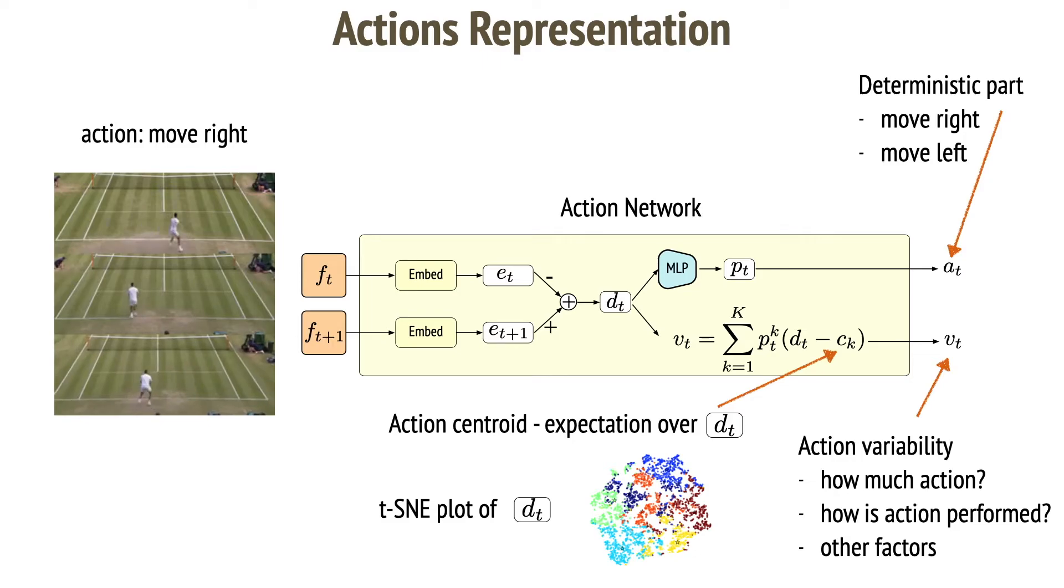We compute action centroids and use the spread from the centroid as an action variability measure. The intuition is that the further the action is from its center, the more differently is its execution from the average execution.